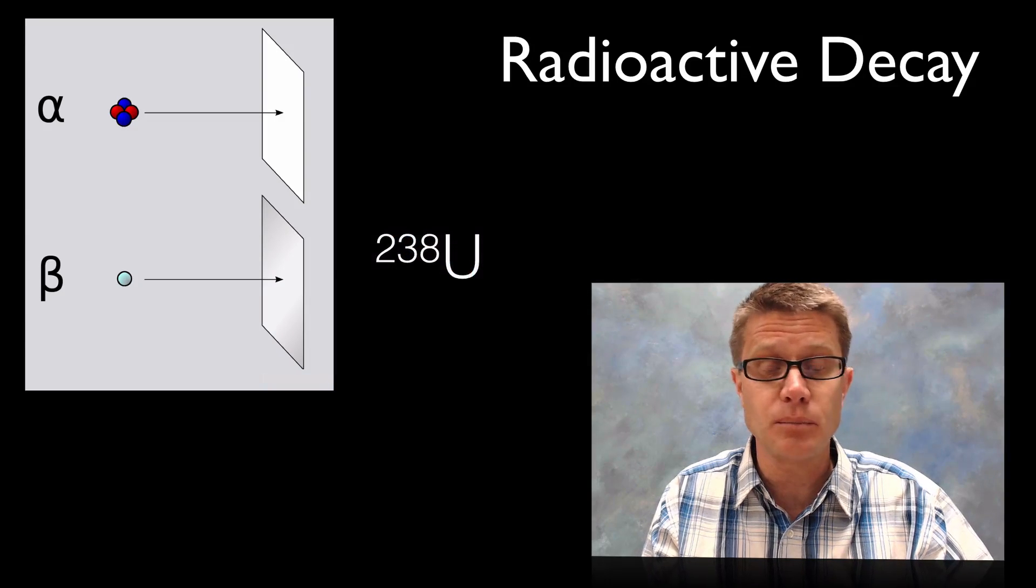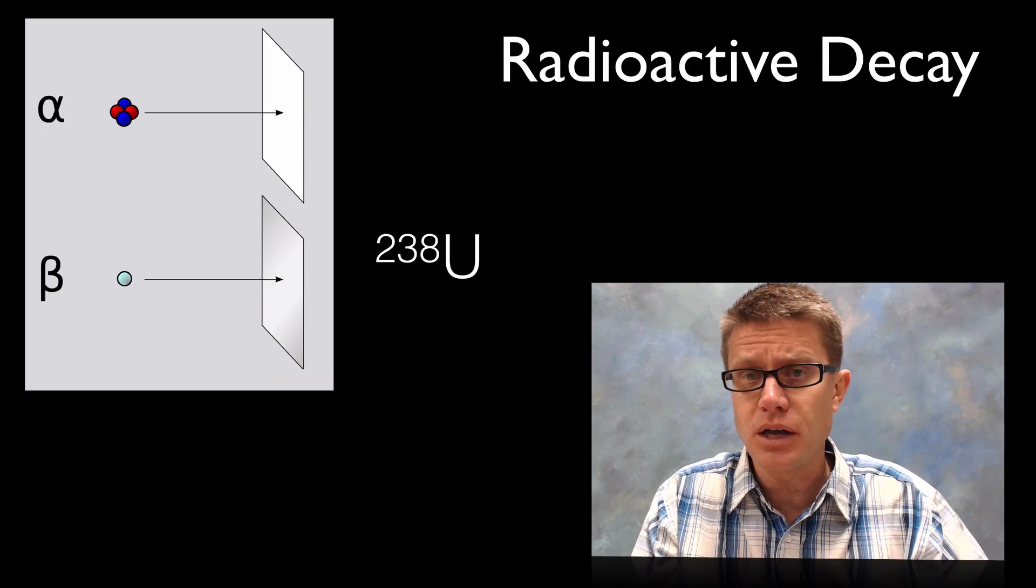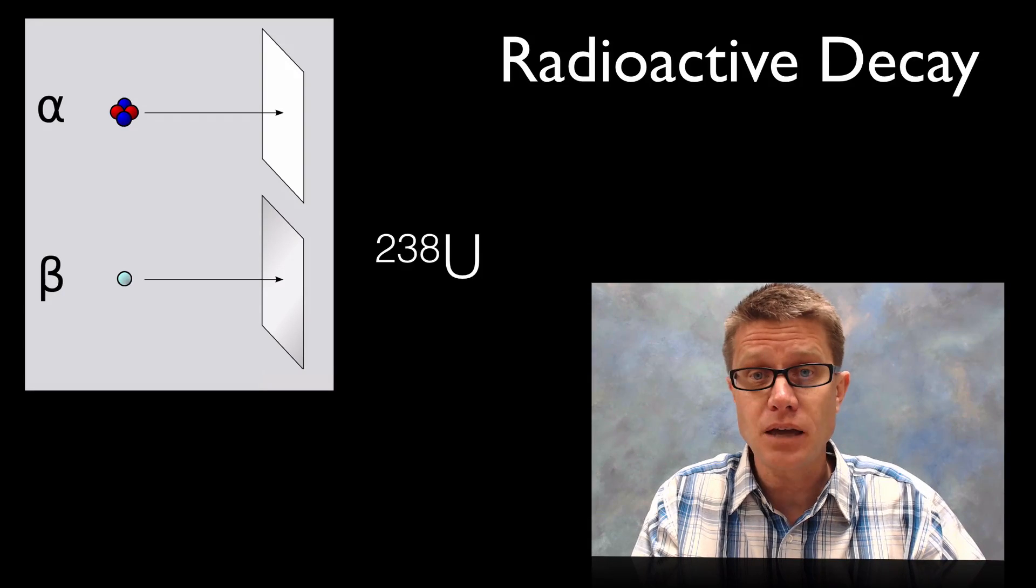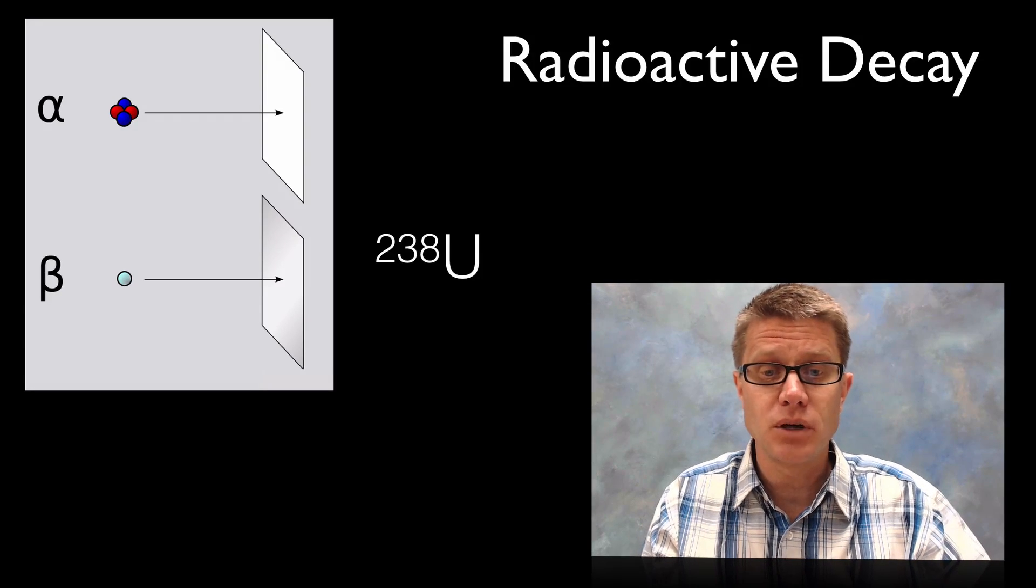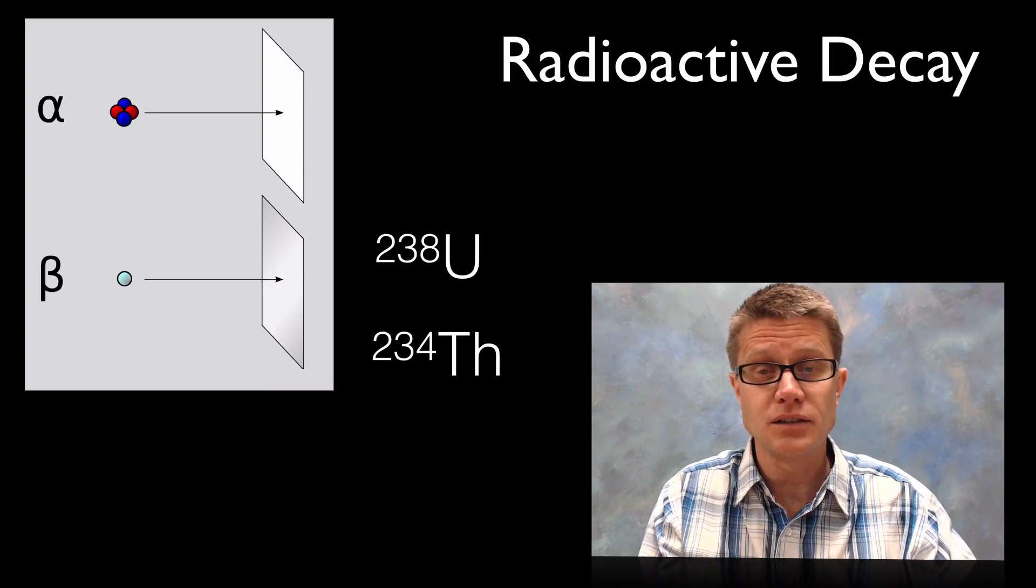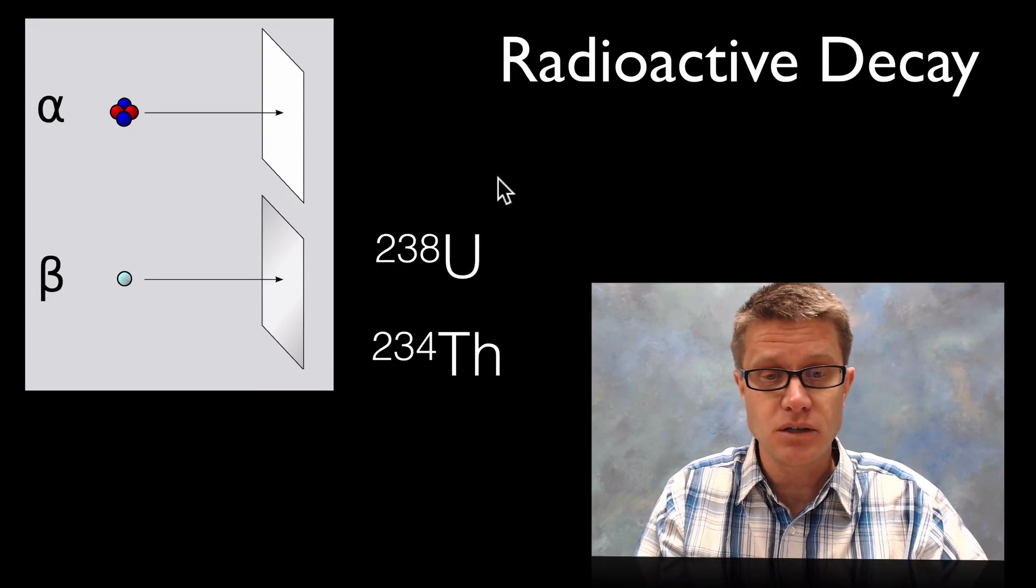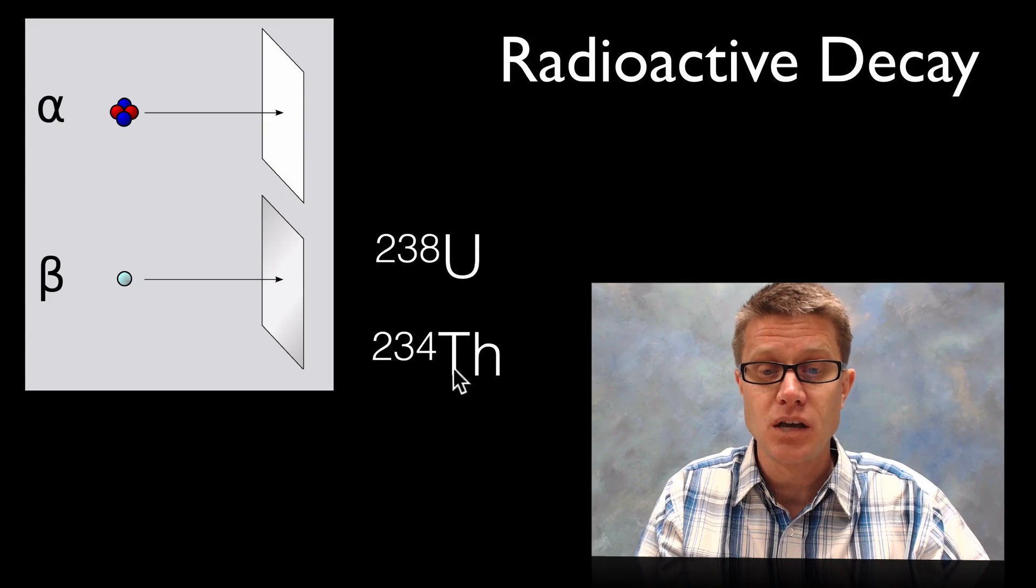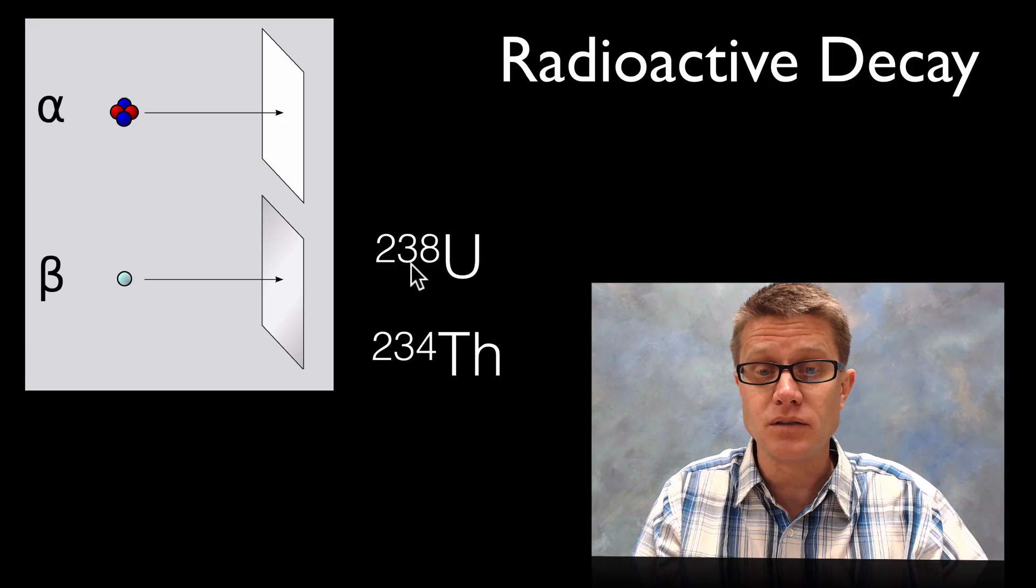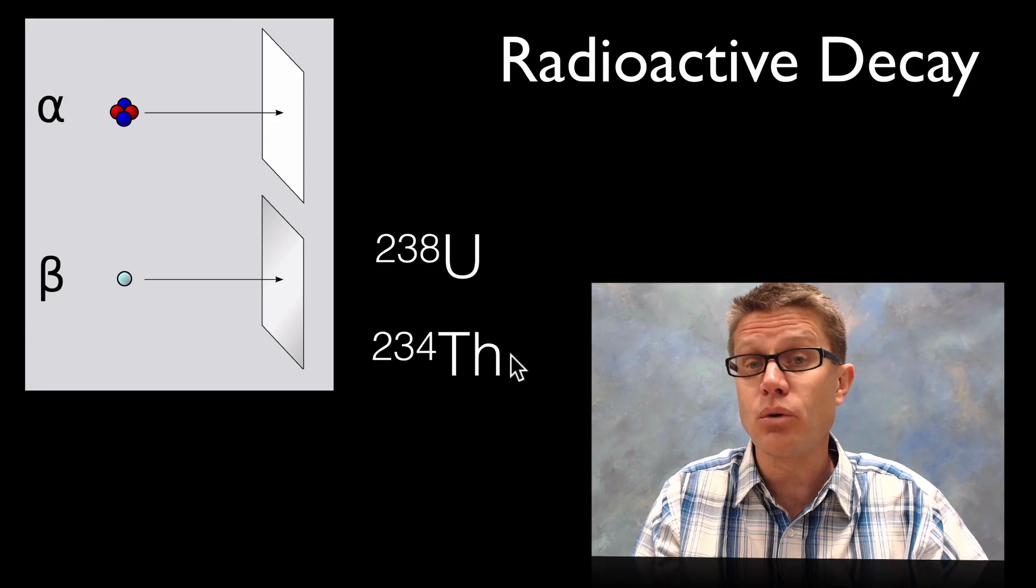So if we talk about an example of that, uranium-238 naturally occurs on our planet but it is going to undergo decay. It will lose an alpha particle. And so as it loses that, it is losing four of these nucleons, these parts inside the nucleus. And so you can see that the mass number has changed but it has also become a new element. Since you have lost two of these protons, it is not uranium anymore. It is thorium.